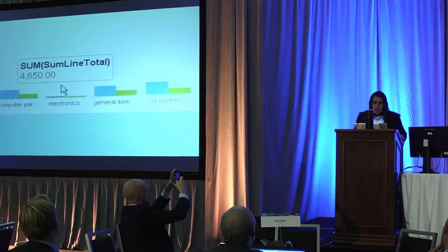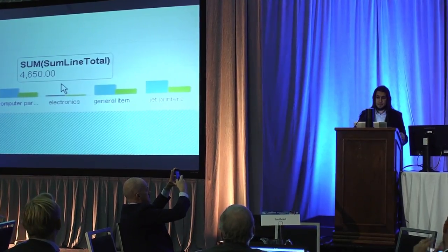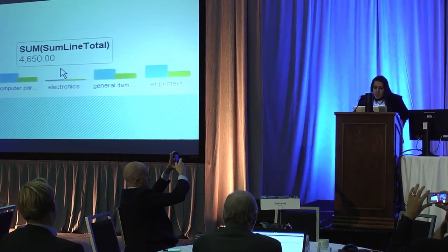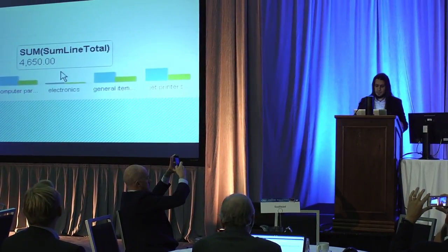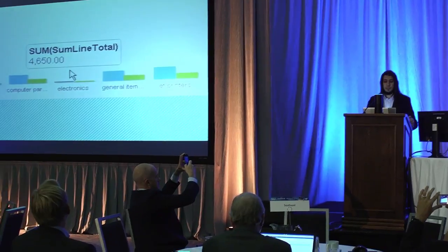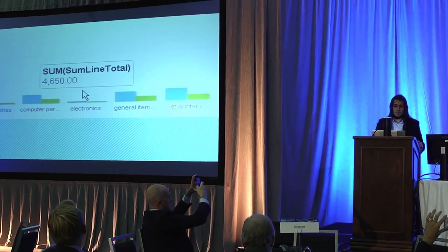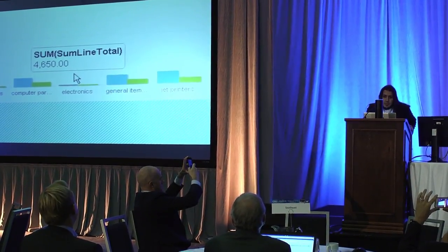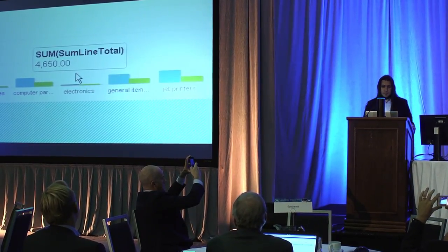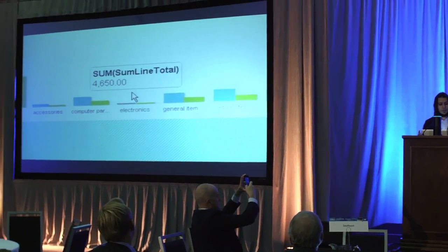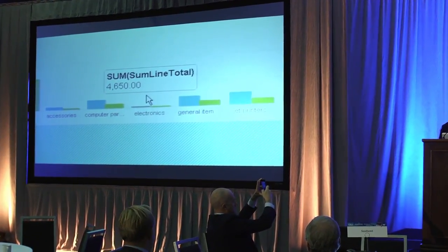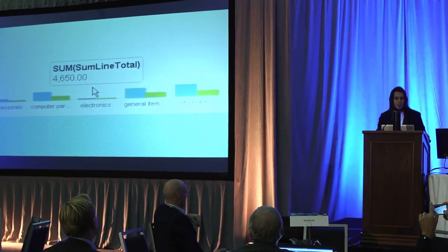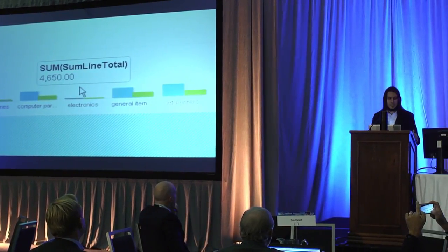Alexa, open B1. This is B1 assistant speaking. What is my command? Show me the sales numbers. Which item group do you want to know? Electronics. Got it, what quarter? First quarter of 2015. The sales of electronics for the first quarter of 2015 are $4,650. We have an issue with the reverb on the walls here, but when I speak closer to her, she can understand.